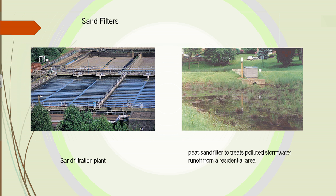We have sand filters, which are very common in cities. Water is simply passed through the sand, which removes pollutants and bacteria. In rural areas, we use peat sand filters, which are a combination of plant debris and sand. This treats polluted stormwater, and as water passes through, it's cleaned up so it doesn't require as much further treatment.